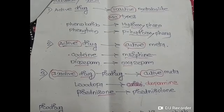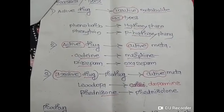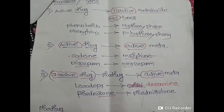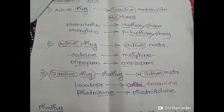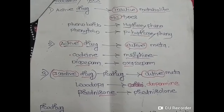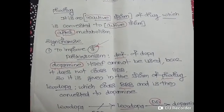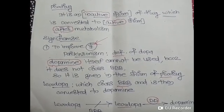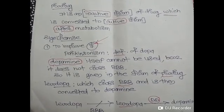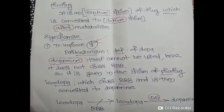The third type involves an inactive drug — a prodrug — being converted into an active metabolite. Before metabolism it is inactive, but after metabolism it becomes active. Examples include levodopa, which is converted into dopamine, and prednisone, which is converted into prednisolone. A prodrug is defined as an inactive form of a drug which is converted into an active form after metabolism.